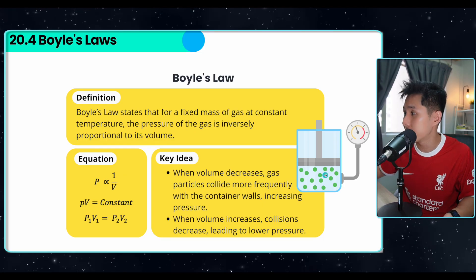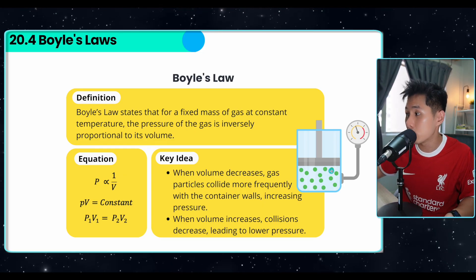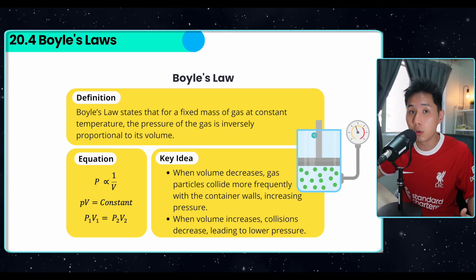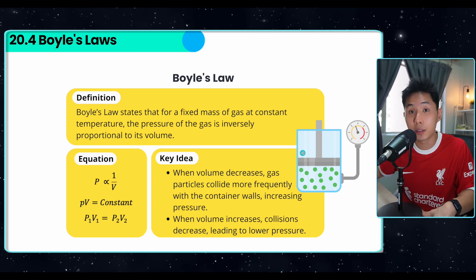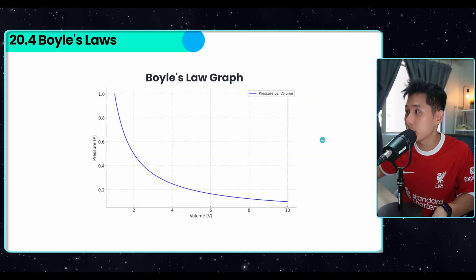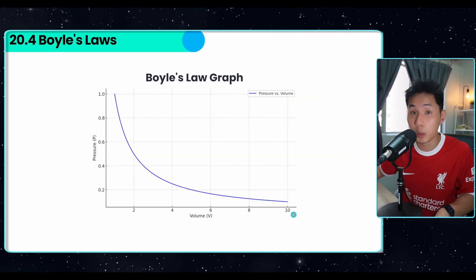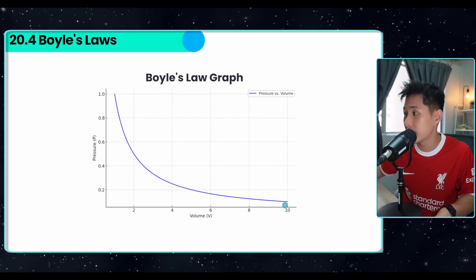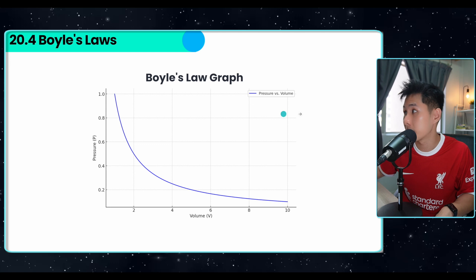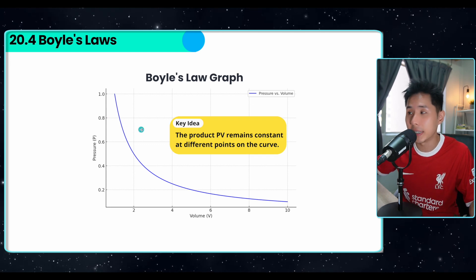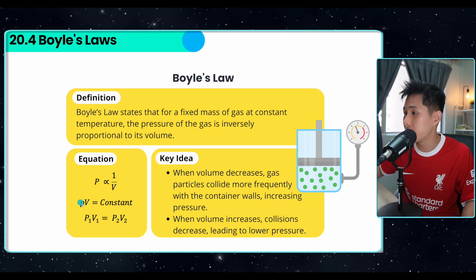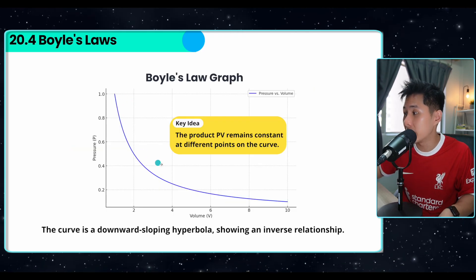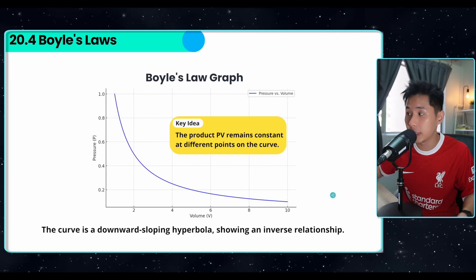The key idea is that as volume decreases, gas particles collide more frequently, increasing pressure. And when volume increases, let's say I pull out the piston, collision decrease lead to lower pressure, which is pretty straightforward. And this is the pressure volume graph. You can see that the higher the volume, the lower the pressure, the lower the volume, the higher the pressure. And the product P times V will always be the same. And that's why we have the equation PV equal to constant. And remember that the curve is a downward sloping hyperbolic. It is an inverse relationship that is not linear.